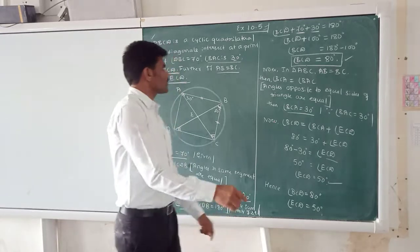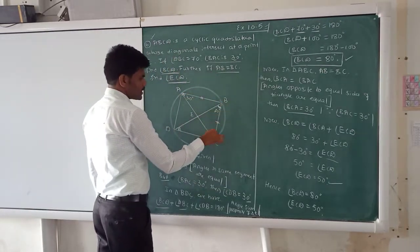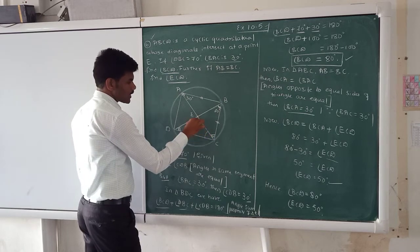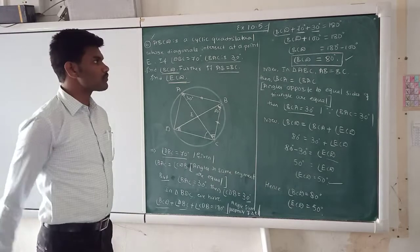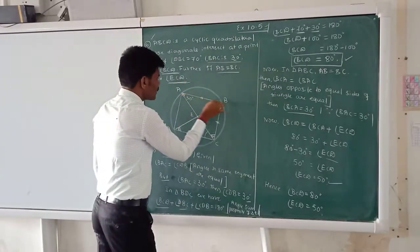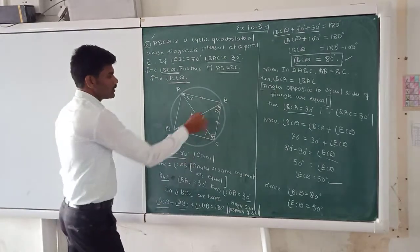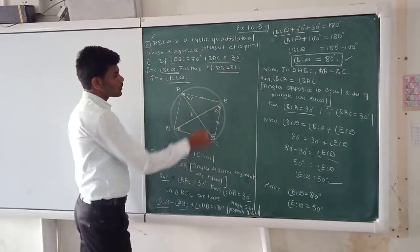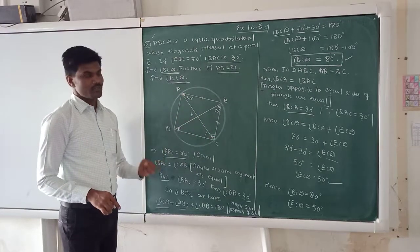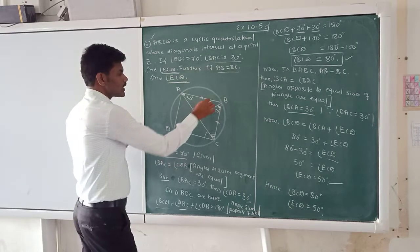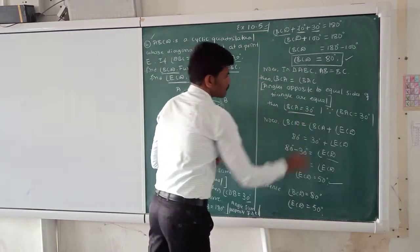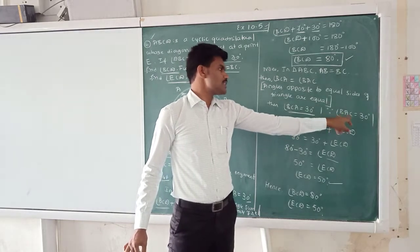But, I have asked one more question. Here, if AB is equal to BC. Understand carefully. Here, AB is equal to BC. They are going to find out this angle ECD and also angle ECD. So, how are you going to find out? Just observe now. So, in triangle ABC, here, if AB is equal to BC, then what happens? The angle BCA is equal to angle BAC because angles opposite to equal sides of a triangle are equal. Okay? So, we know that angle BAC, how much is there? Angle BAC is 30 degrees. Automatically, the angle BCA is also 30 degrees because angles opposite to equal sides are equal. Okay?